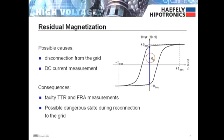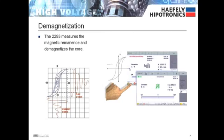This may not be the case if the transformer is disconnected from the grid in the presence of high voltage or if DC current is applied, such as during a resistance measurement. The transformer should be demagnetized to prevent faulty measurements during following turns ratio or frequency response tests and to avoid possible inrush currents when the transformer is reconnected to the grid. The 2293 measures the magnetic remnants and is able to demagnetize the core.